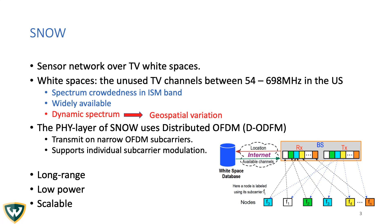Also, the physical layer of SNOW is designed based on a distributed implementation of OFDM, which we call DOFDM, where it uses narrow OFDM sub-carriers and also supports individual sub-carrier modulation. However, inter-carrier interference is more pronounced under mobility due to such design. SNOW also offers long range and low power communication and it is highly scalable. We will see how we address those challenges in our paper.